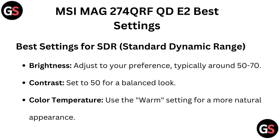Best settings for SDR — Standard Dynamic Range. Brightness: adjust to your preference, typically around 50–70. Contrast: set to 50 for a balanced look.